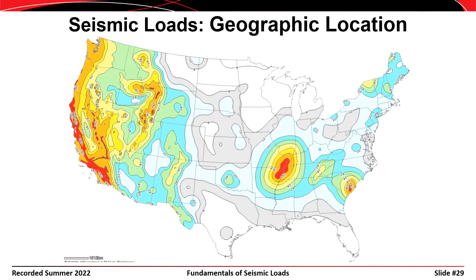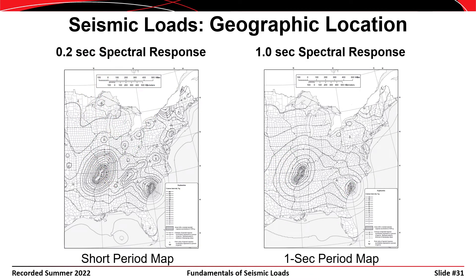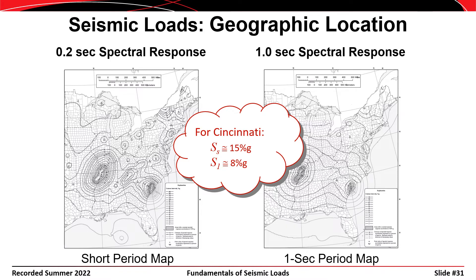One contour shows the ground acceleration for short period structures, S sub S; another shows the ground accelerations for one-second period structures, S sub 1. Looking at the eastern United States, Ohio isn't particularly seismically active — S sub S is about 15% of G and S sub 1 is about 8% of G. In the Cincinnati area, most structures will be governed by wind rather than seismic loads, though the soil type can change that. Someone in Cincinnati might also be designing a building in California or another seismically active location.